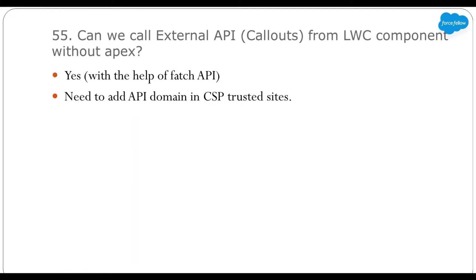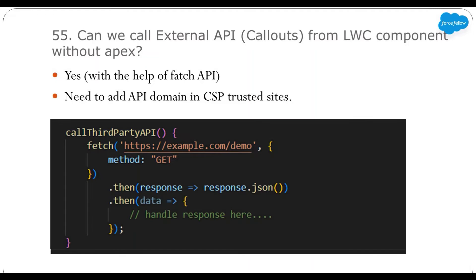We need to add the API domain in CSP Trusted Sites — similar to adding a domain in Remote Site Settings or Named Credentials. When calling an external API from LWC with the fetch API, we need to add the domain in CSP Trusted Sites. In the example, the fetch method takes the endpoint as the first parameter and other HTTP options like method type, body, and headers as the second parameter. This example uses promises, but you can also use async/await. I have created a separate video demonstrating all these things practically — link in the description.